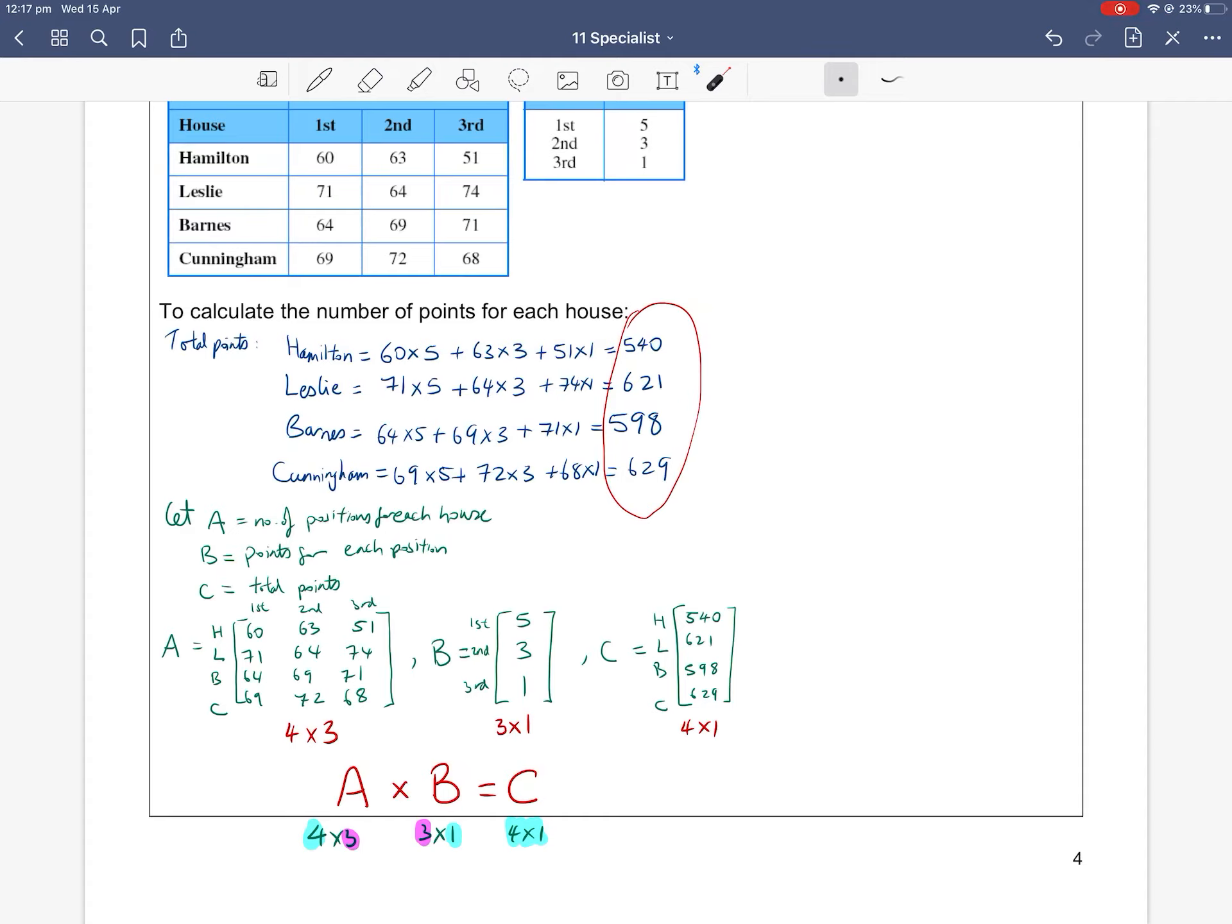And when we multiply matrices, we mean we multiply and add. So how did we get 540? We took 60 times five. So 60 is over here. Let me highlight this. So 60 times five. And then we added 63 times three. And then we added 51 times one. And then we add them, we plus them together in between to give us 540.